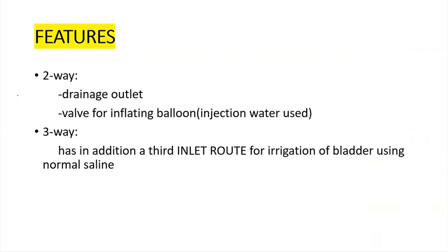The various features of the urethral catheter: for the two-way catheter, you have the drainage outlets and valve for inflating the balloon, and sterile water for injection is used. The three-way catheter has, in addition, a third inlet route for irrigation of the bladder using normal saline.